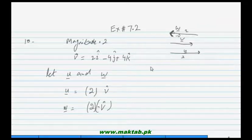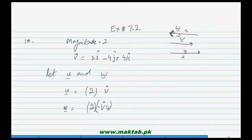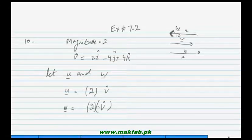So we can find two vectors u and w. U will be found by multiplying 2 with the unit vector v-hat, and w will be found by multiplying 2 with minus v-hat. These are the two required vectors in this part.